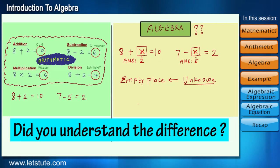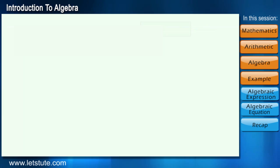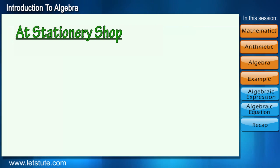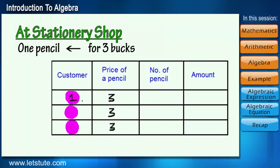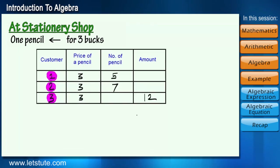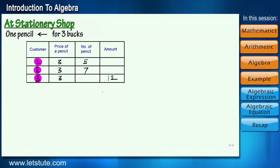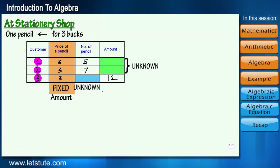I'm sure you have now understood the difference between arithmetic and algebra. Let's take an example to learn a few more things. Suppose you have a small stationery shop where you sell one pencil for 3 bucks. Customer one comes and asks for five pencils, customer two asks for seven pencils, customer three directly gives you 12 bucks and asks to give as many pencils as you can. Friends, your price for a pencil is a fixed amount, and what is unknown to us is either number of pencils or total amount.